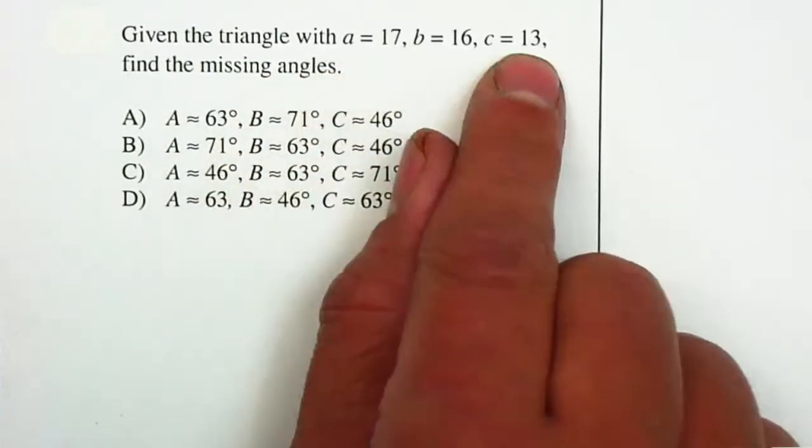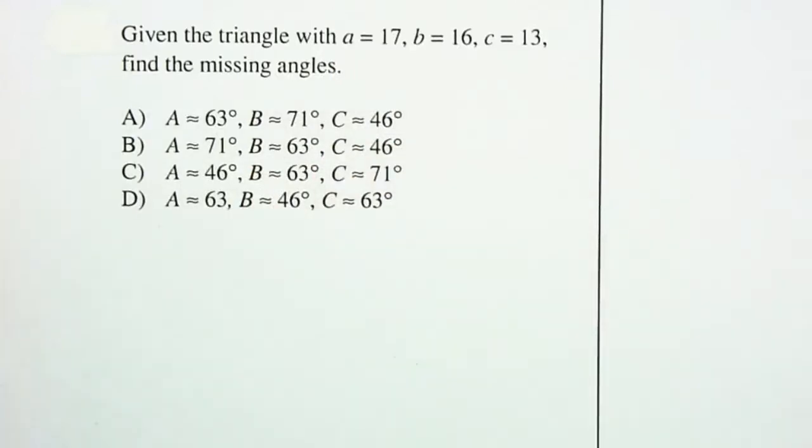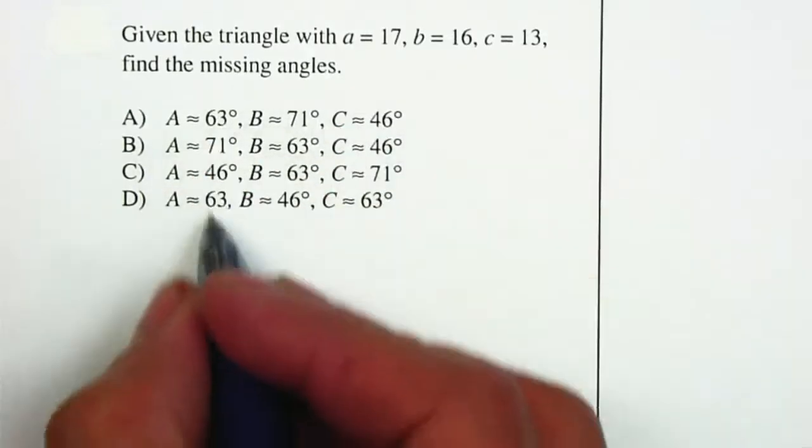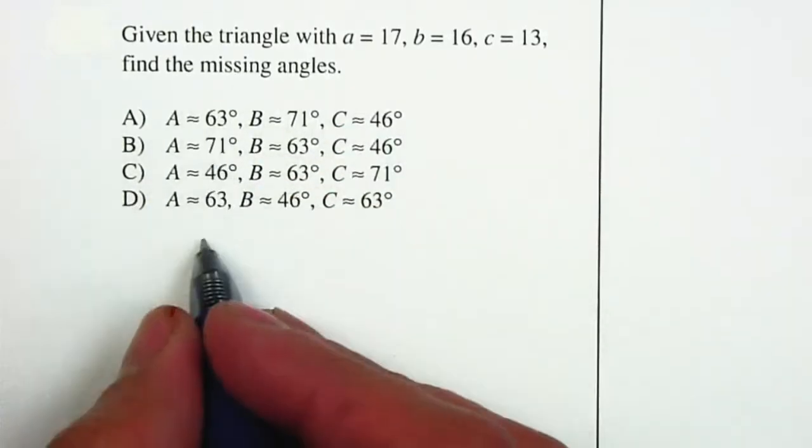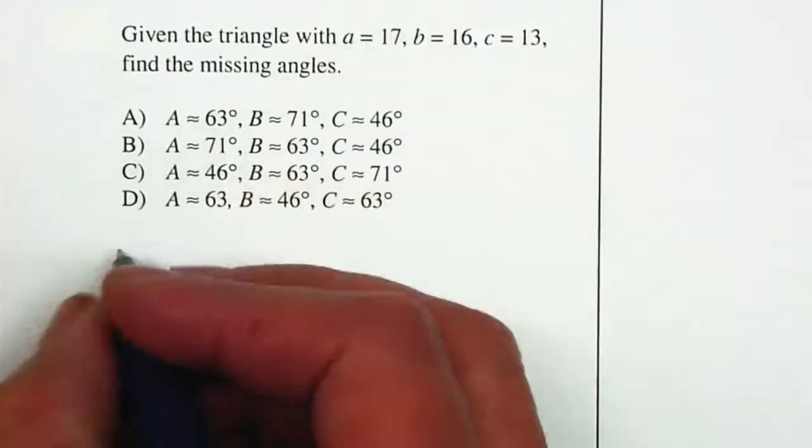Since they give you all three sides and don't give you an angle, we're forced to use the law of cosines. I need to decide whether I want to find angle A, B, or C. Let's find angle A first, since it's listed first.